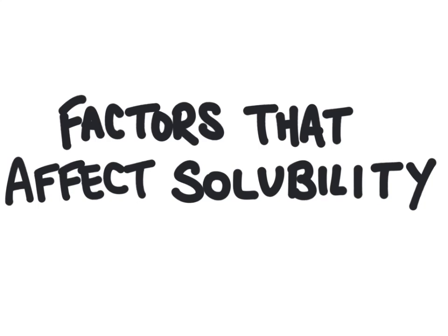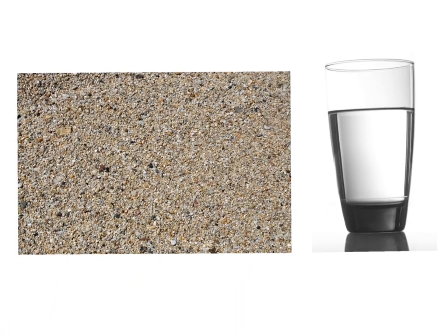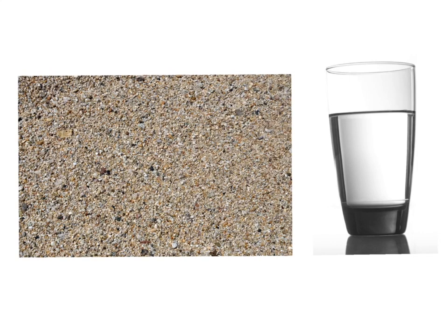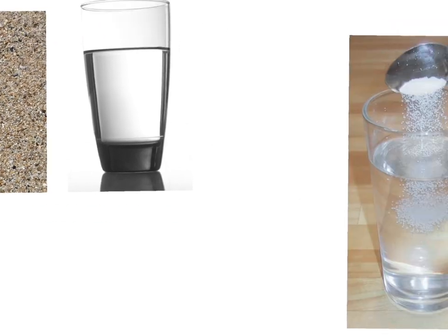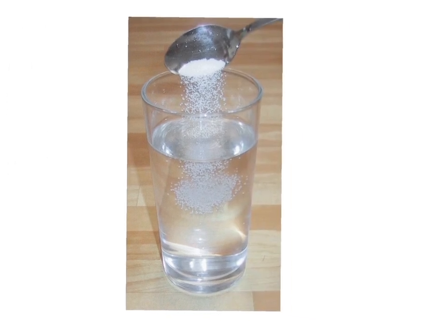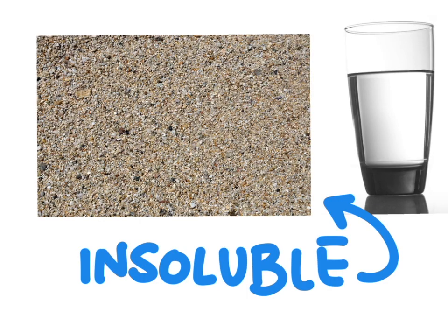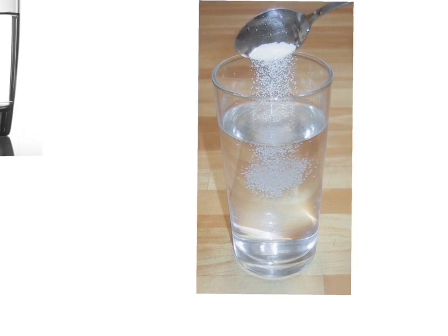In this video we are going to learn about factors that affect solubility. Try this experiment at home, or at least think about what would happen if you did try it. Take some sand and stir it into a glass of water — the sand just settles to the bottom. Now try taking some salt and stirring that into a glass of water. It disappears, it dissolves. Some things are able to form solutions with water, and other things are not. The sand did not dissolve, so it is insoluble. The salt, on the other hand, did dissolve, and so it is soluble.